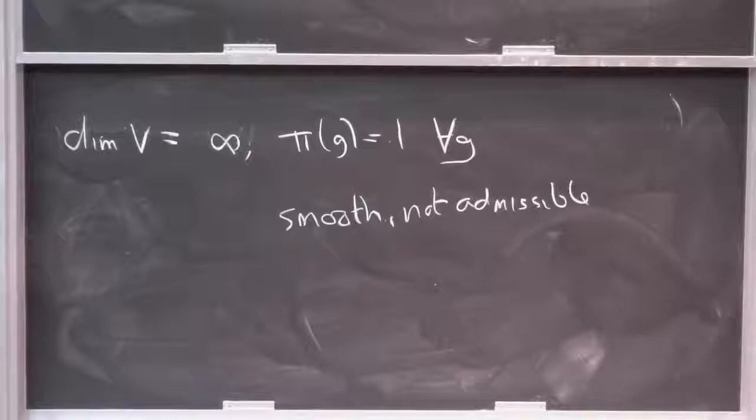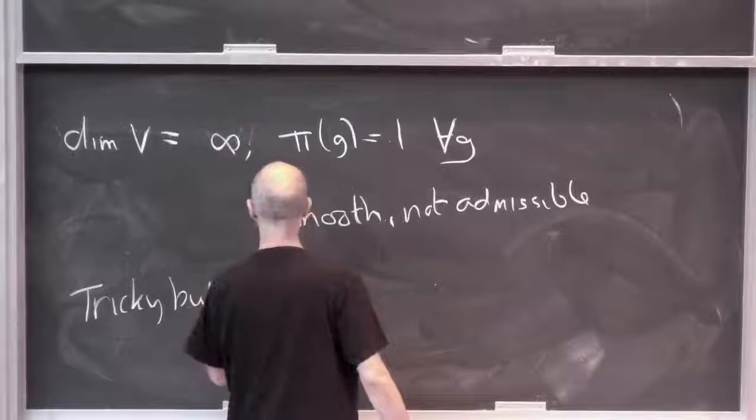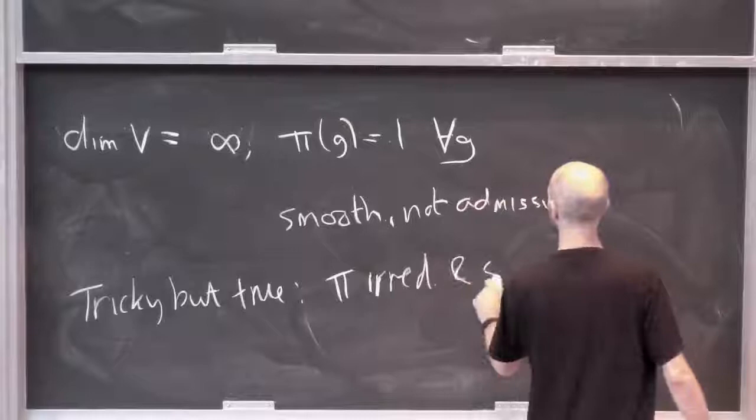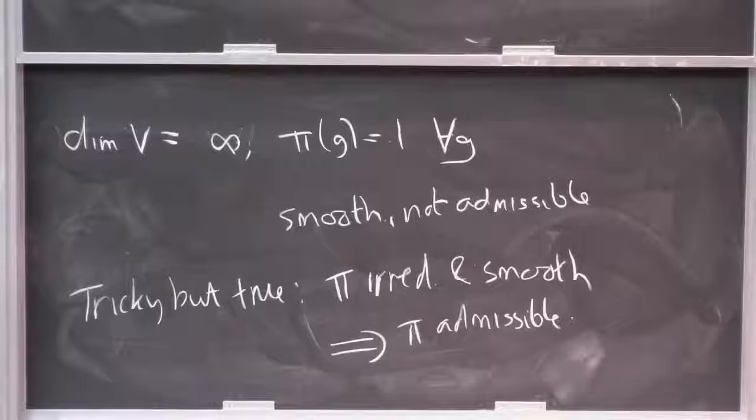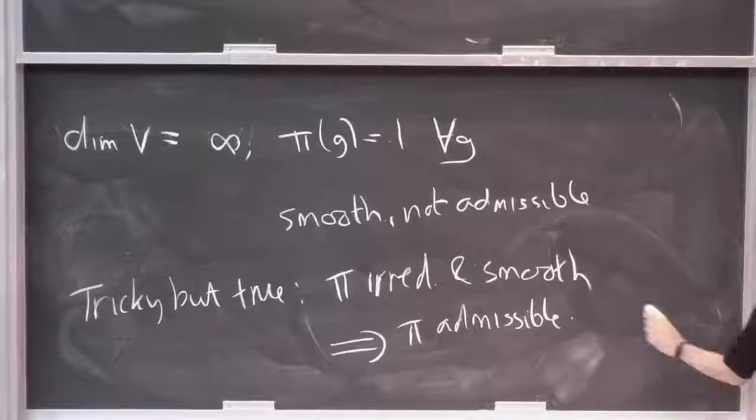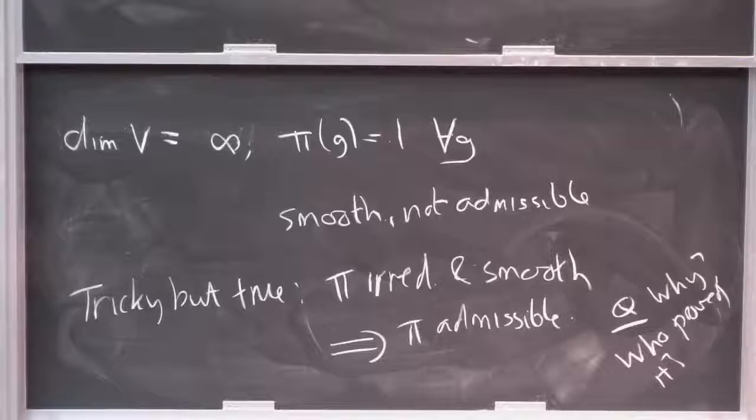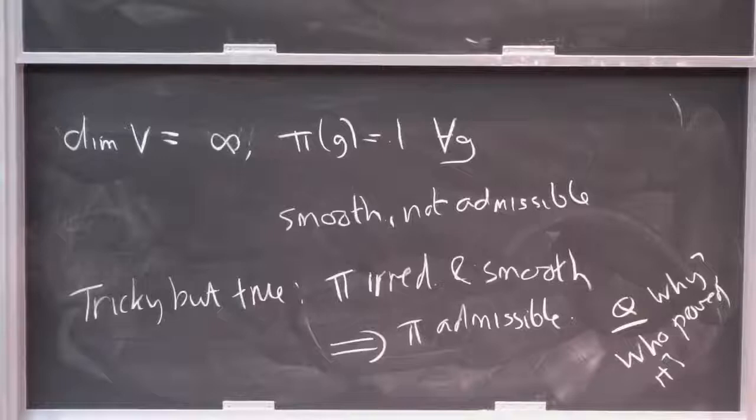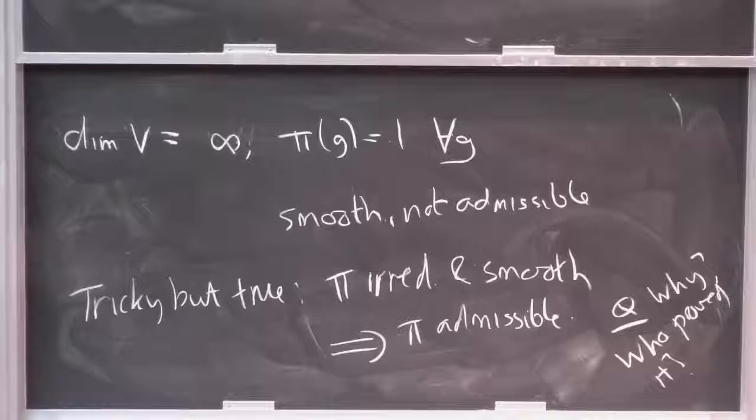So this is something I have an infinite direct sum of trivial one-dimensional representations. And as a rather tricky result, if pi is irreducible and smooth, that actually implies admissible. I don't know how to prove that, but I'm pretty sure it's a standard thing, maybe due to Jacquet or something. Why did I make such trivial remarks? It's just sometimes you'll come up with your own questions and one of these things here will answer it.